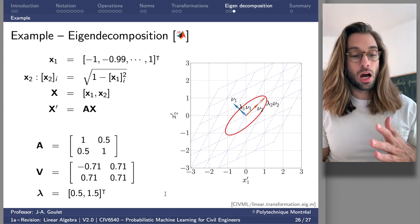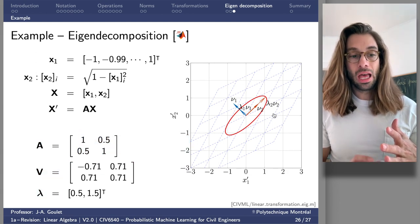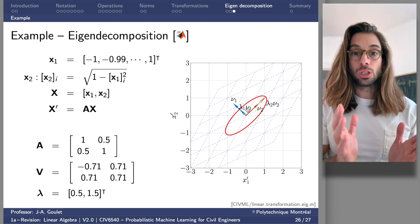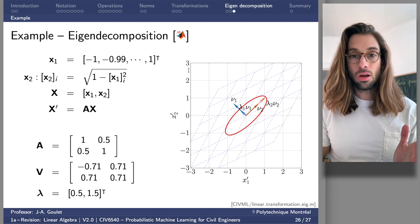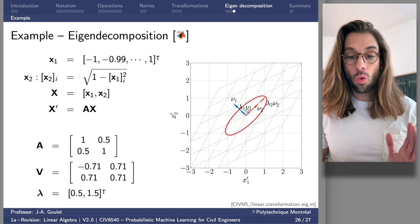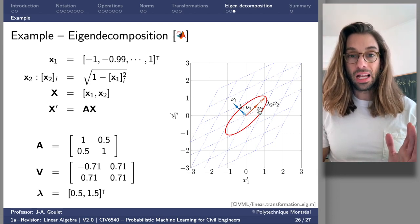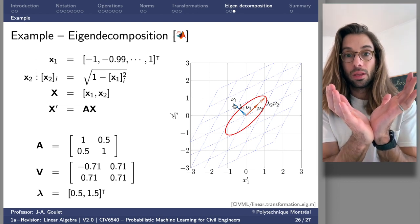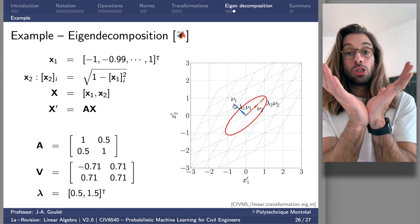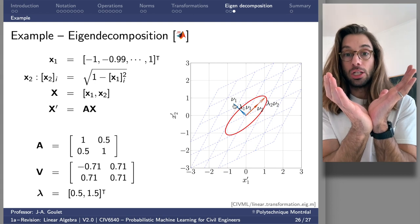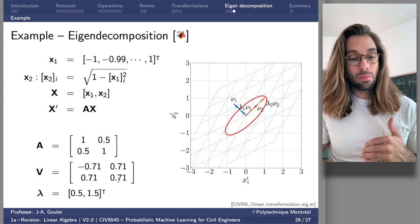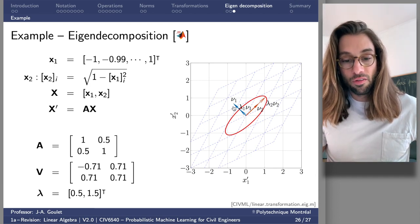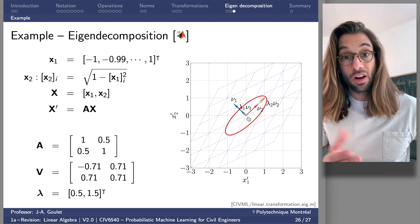Looking at the transformation we had earlier, when we perform eigendecomposition, we find a new reference coordinate system. Instead of X1 and X2, we have new coordinates V1 and V2, where the eigenvectors represent the new coordinate system and the lambda values represent the scaling in that new orthogonal coordinate system. I want to find a new coordinate system in which the transformations are independent of each other. The eigenvectors are given in matrix V and the eigenvalues are given in the vector lambda. Lambda 1 and Lambda 2 represent the scaling in the new coordinate space.